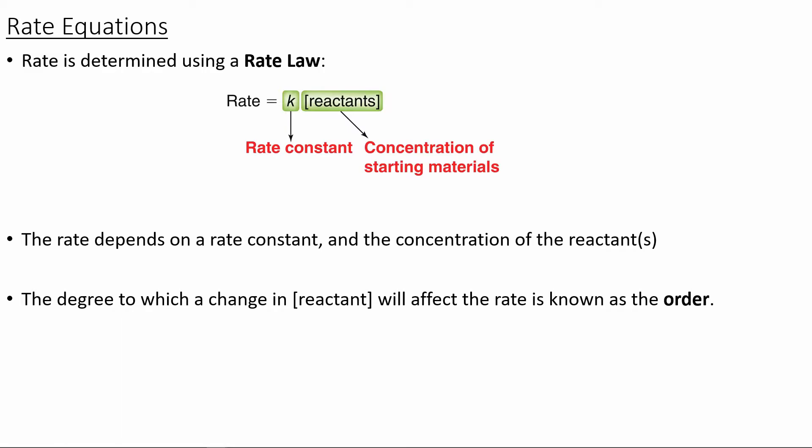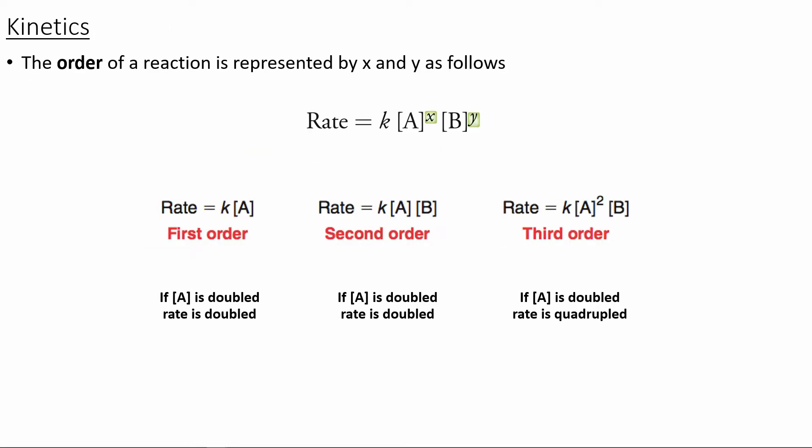We can use the rate law to help study the rate of a reaction. The rate law equals a rate constant for a specific reaction multiplied by the concentration of the starting materials. The degree to which the concentration of the reactants affects the rate is known as the order. A first-order reaction depends on only the concentration of A — if A is doubled, the rate doubles. A second-order reaction involves two reactant concentrations affecting the rate. A third-order reaction has an exponential variable on the concentration, so if we double the concentration, we quadruple the rate.